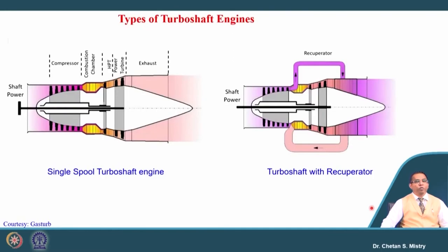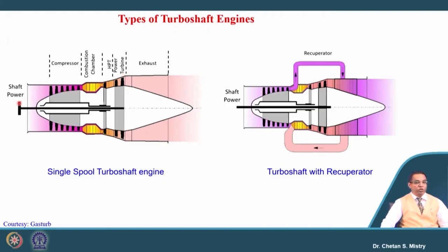Now let us move forward with the configurations or types of turboshaft engines which are possible. Here we are having our turboshaft engine where we have a compressor followed by the combustion chamber. We have our turbine — the HP turbine — and another set of turbine blades called the power turbine, and then the exhaust. The HP turbine is used to rotate the compressor and the power turbine is used to rotate the shaft. We can call this configuration a single spool turboshaft engine.